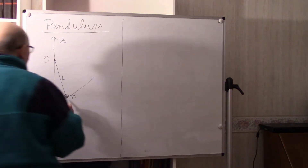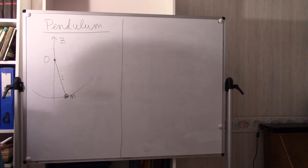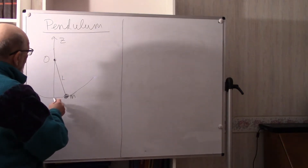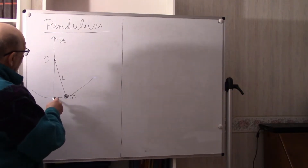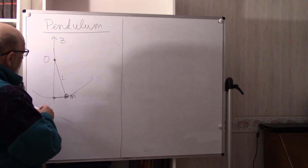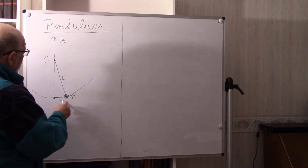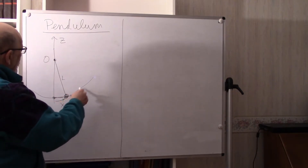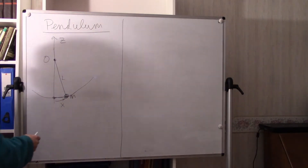We consider the mass as a point mass, so it makes sense to talk about its position. The coordinate system is as follows: X denotes the arc length between the lower point of the pendulum and the actual position. X is positive when the pendulum goes to the right, and negative when it goes to the left.